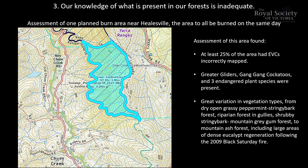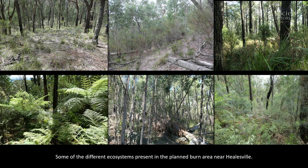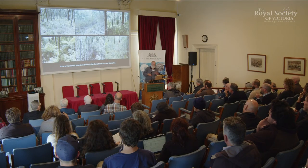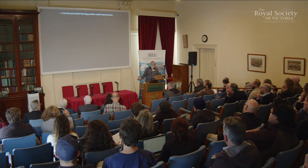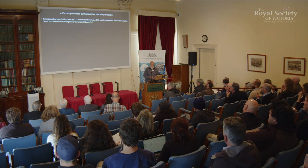Going on to an area that was supposed to be burnt — our knowledge was inadequate. We assessed this area and came up with these findings: the EVCs were incorrectly mapped over 25% of the area, we found a number of endangered species, and there's great variation in fuel types and forest vegetation, all of which was to be burnt on the same day. A fire across all those different ecosystems presents serious problems.